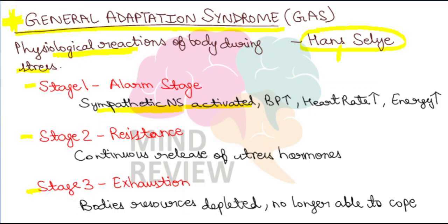Yani ki jab bhi aap stress mein hote ho, kisi bhi stressful situation mein, ya toh aap situation ko fight karo ge ya wahan se bhaag jao ge yani ki flight karo ge. So in the Alarm stage, sympathetic nervous system gets activated — blood pressure increase hoga, heart rate increase hoga, energy levels increase honga. And all the things that are at the moment not important, for example digestion, that will get stopped.